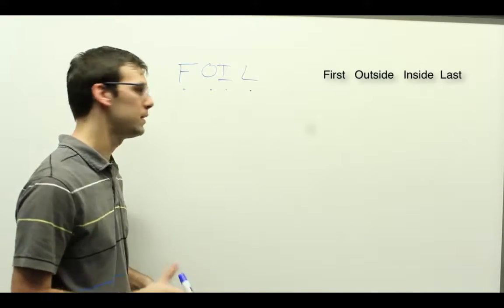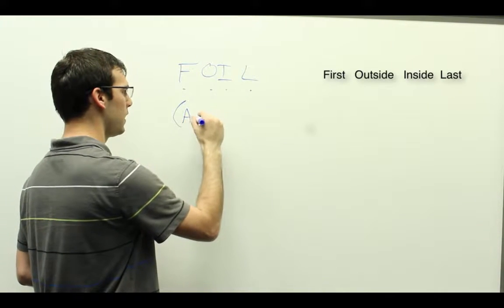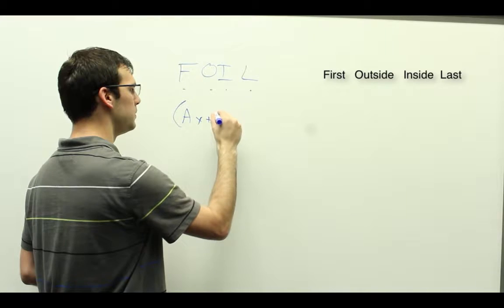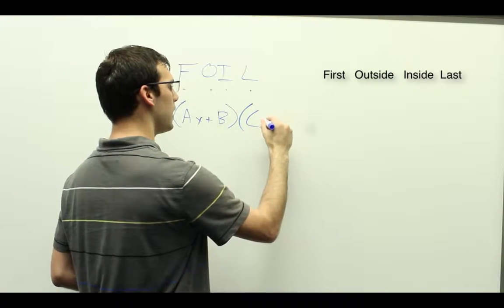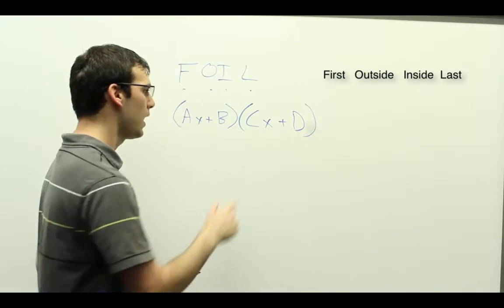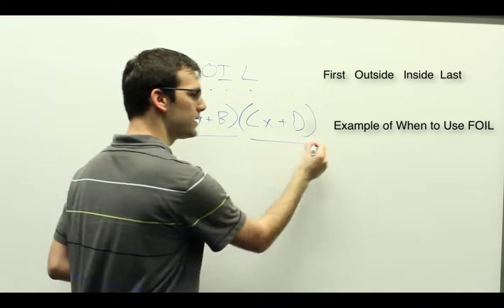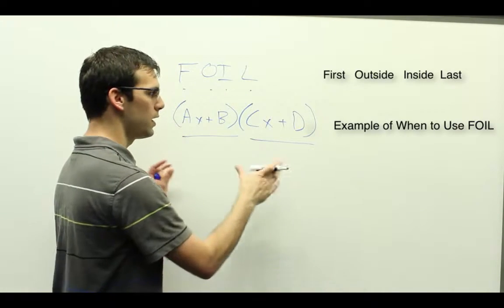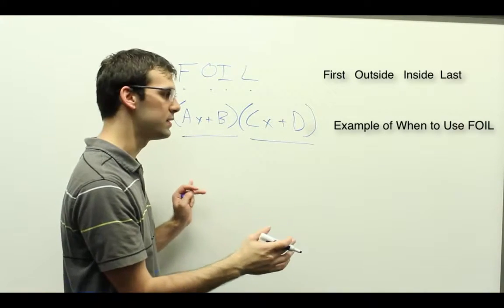And so to understand what that means, let's start off with the general form. So we have AX plus B times CX plus D. We have two things that we're multiplying together. We're going to try and end up with a simplified form that no longer has any parentheses.